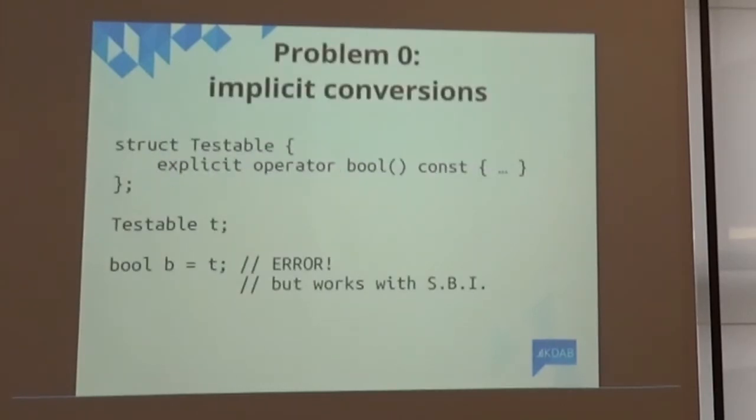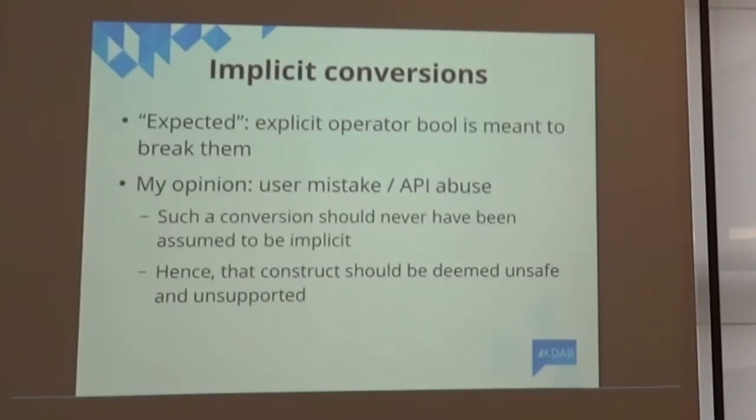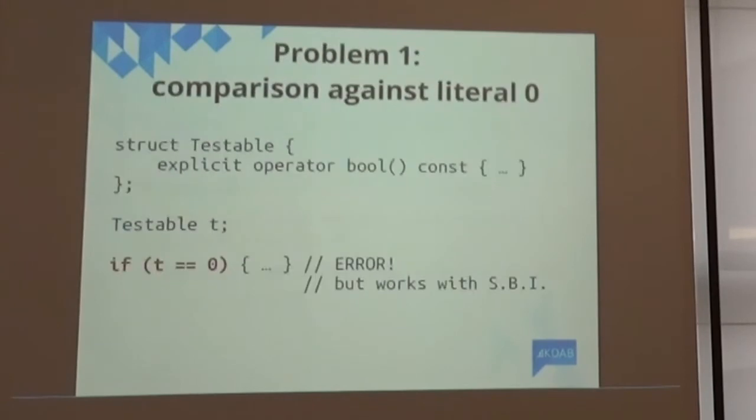The first thing that breaks, of course, are going to be the implicit conversion against bool. All of those, that kind of code over there, the bool b equals t, works with the safe bool idiom and stops working with explicit operator bool. However, this is not an issue for me. That's why I said it's problem zero, because I thought that this is expected. That was an API abuse, and it's good that you now found places in your source code where there was a conversion you may not have wanted. Right, so that's not a problem.